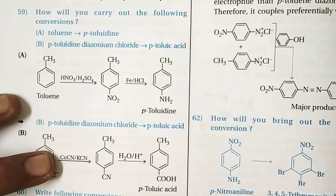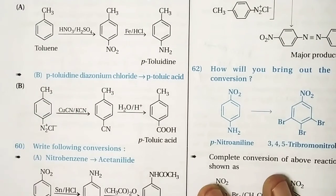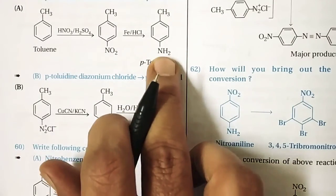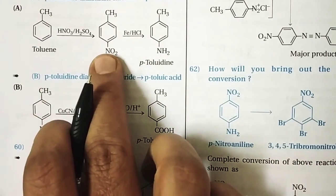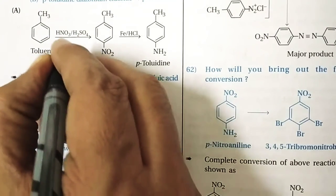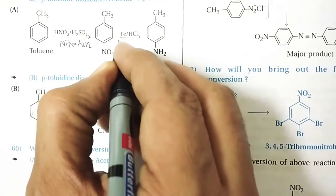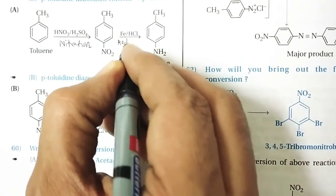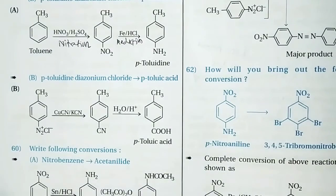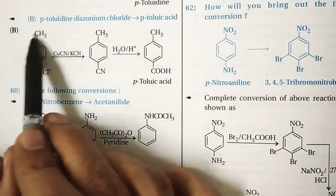Question 59 (conversion 1): How will you carry out the conversion of toluene to paratoluidine? To introduce an NH2 group, we must first introduce NO2. So the first step is nitration of toluene, followed by reduction of NO2 to NH2 to give paratoluidine.